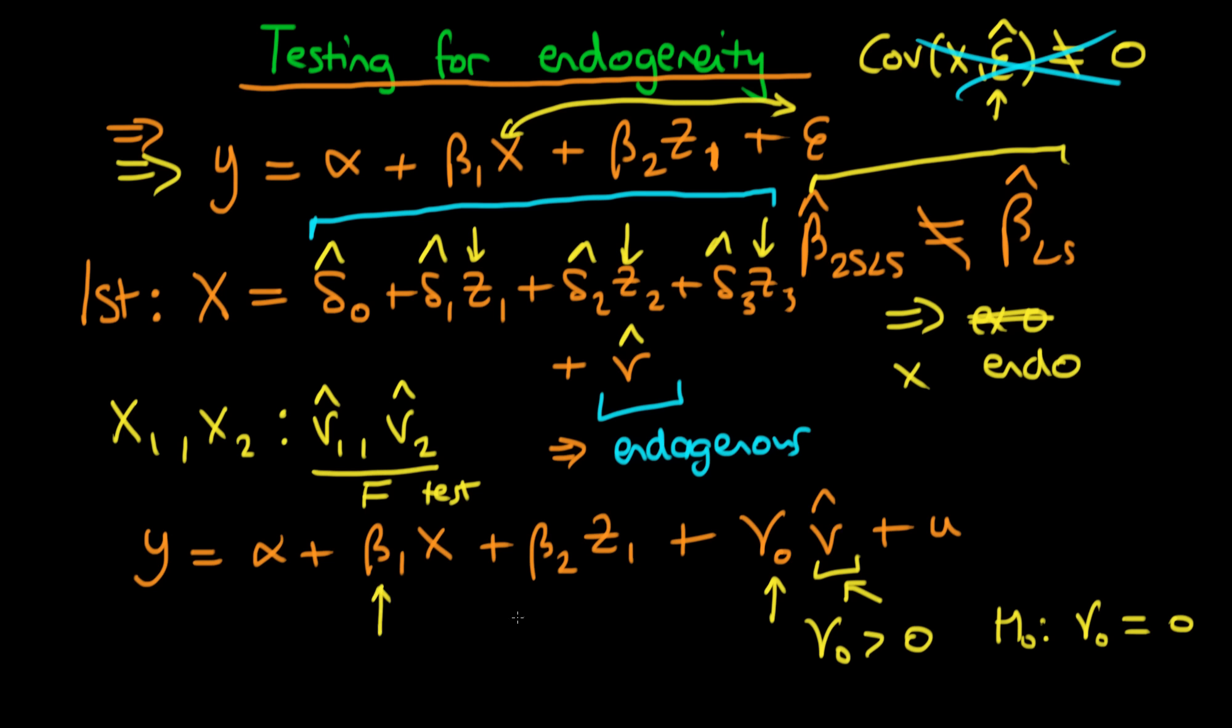Another thing I want to talk about here is, if we actually do include our estimated errors from our first stage regression in our structural equation, so we include v hat, then it turns out that beta 1 hat for least squares in this structural equation, and beta 2 hat least squares in the structural equation, actually coincide exactly with that which is obtained from two stage least squares. And the reason for that are quite simple, really. Because, essentially,